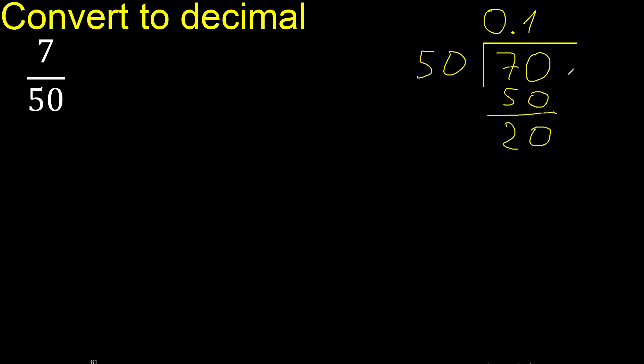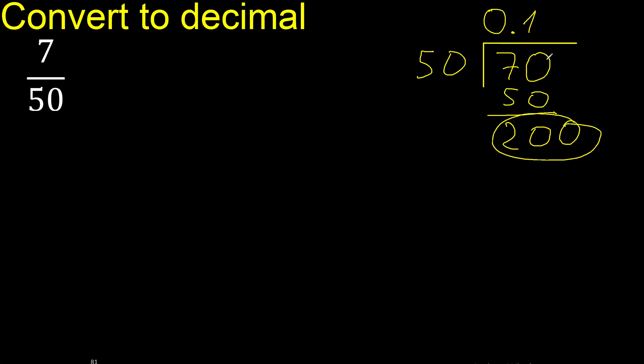There is no number that goes down further, so complete — always complete with 0. The point is already placed. Bring down: 200.